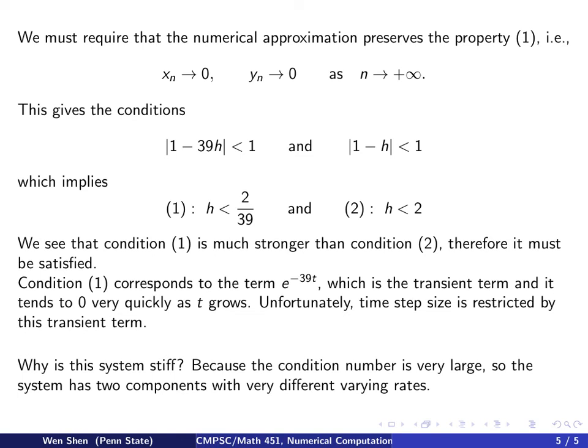So thinking back at a more abstract level, why is the system stiff? Well, that's exactly caused by this large condition number in the coefficient matrix, which leads to two components in your exact solution, and they are varying with a very different rate. So if you want to catch the lower varying rate component, as well as the fast oscillating varying rate, it is not easy.